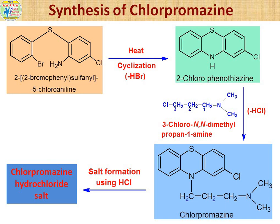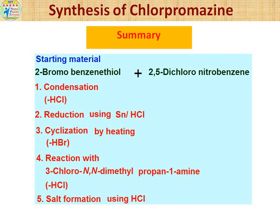Let's summarize the synthesis of chlorpromazine. Starting materials required: 2-bromobenzene thiol and 2,5-dichloro-nitrobenzene. Step 1: condensation — HCl removal, two benzene rings joined through sulfur. Step 2: reduction of the intermediate — the nitro group converts to an NH2 group. Step 3: cyclization by heating — the tricyclic ring system (2-chlorophenothiazine) is generated with the 10th-position side moiety missing. Step 4: reaction with 3-chloro-N,N-dimethylpropan-1-amine — HCl removal yields chlorpromazine; reaction with HCl gives the hydrochloride salt.